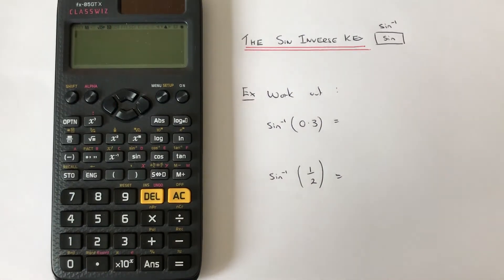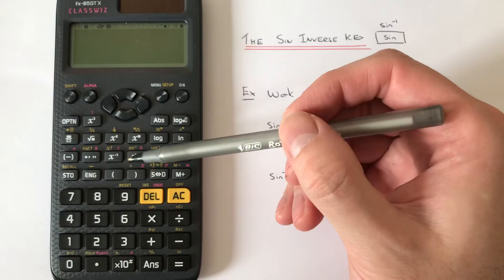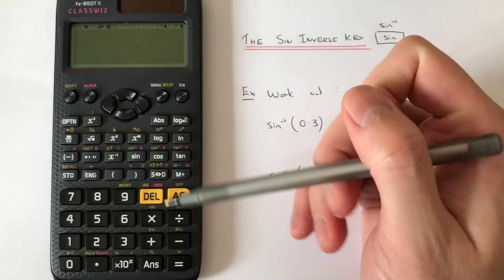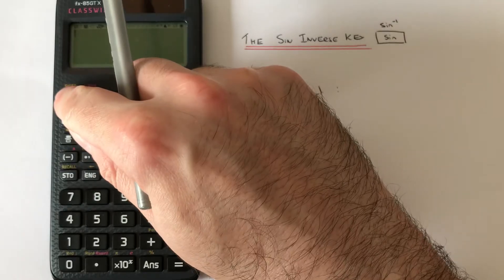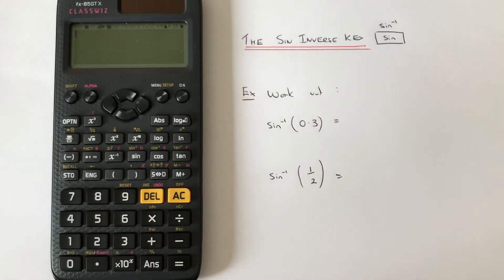Hi guys, welcome back. This is Maths 3000. Today I'm going to show you how to use the sin inverse key on a Casio Classwiz scientific calculator. To get sin inverse up, it is on the second function of the sin key and you just press shift sin. Let's have a look at a couple of examples.